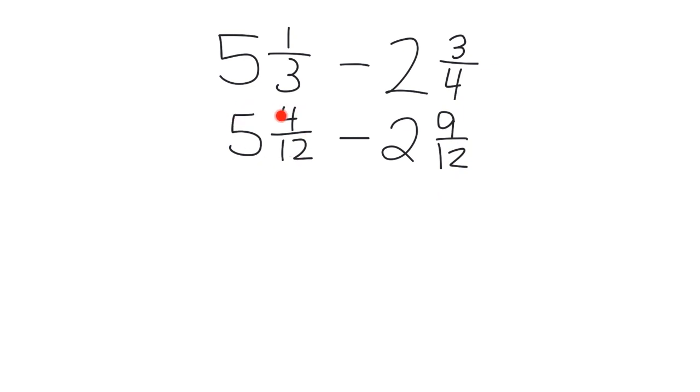So what we're going to do is we're going to think of this 5 as 4 and 1. 4 plus 1, right? But that 1, we're going to think of it as 12 twelfths. Because that's what that 5 really is. It's a 4 plus 1, and we're going to write that 1 as 12 twelfths. So this 4 plus 1 is 5.